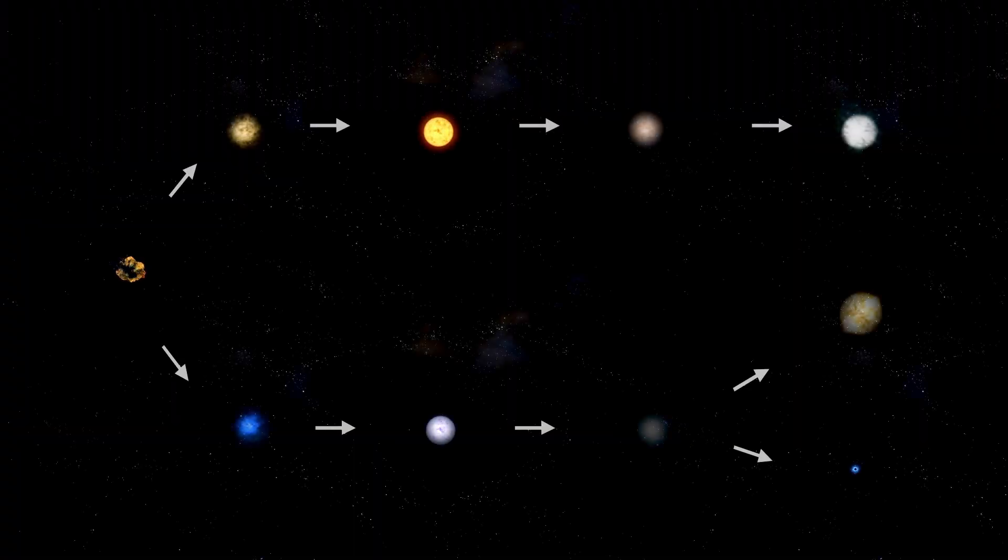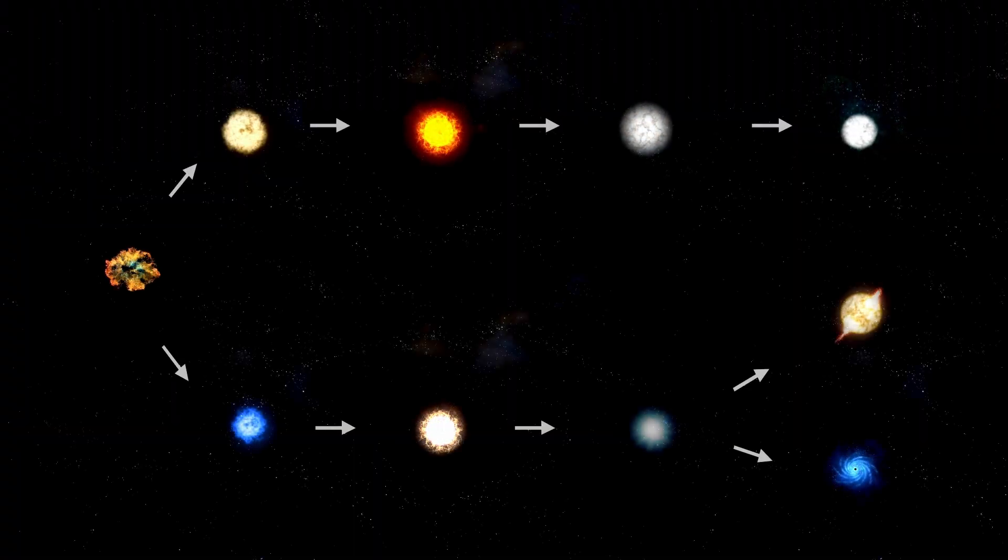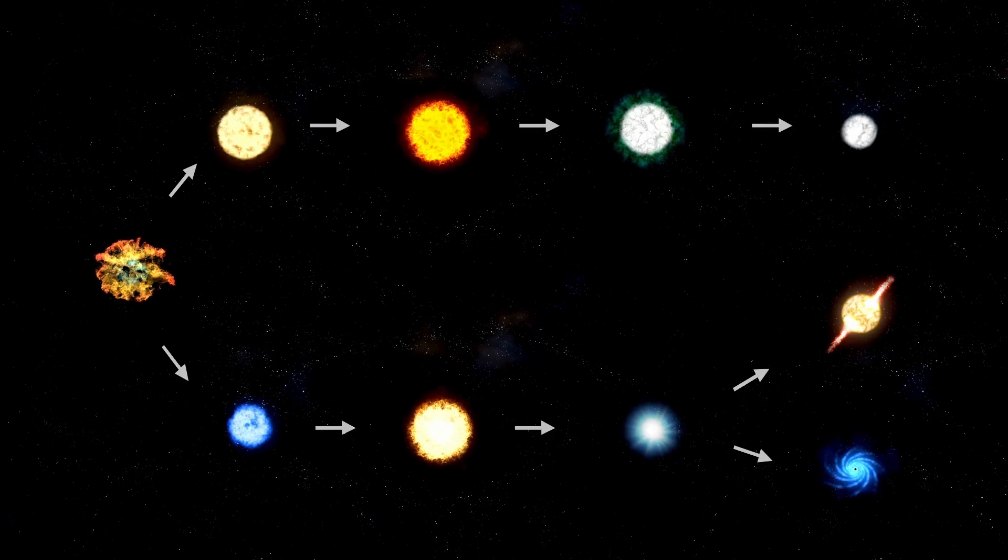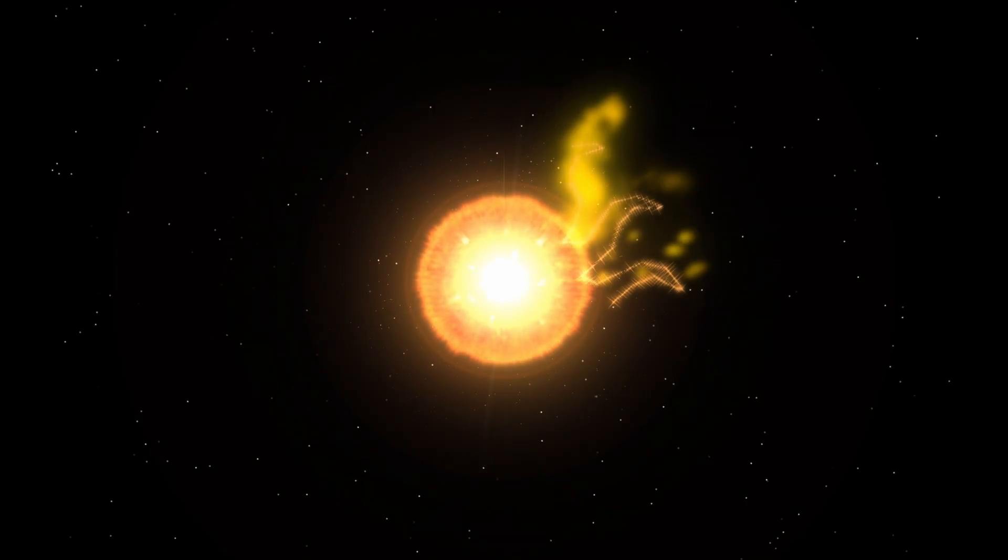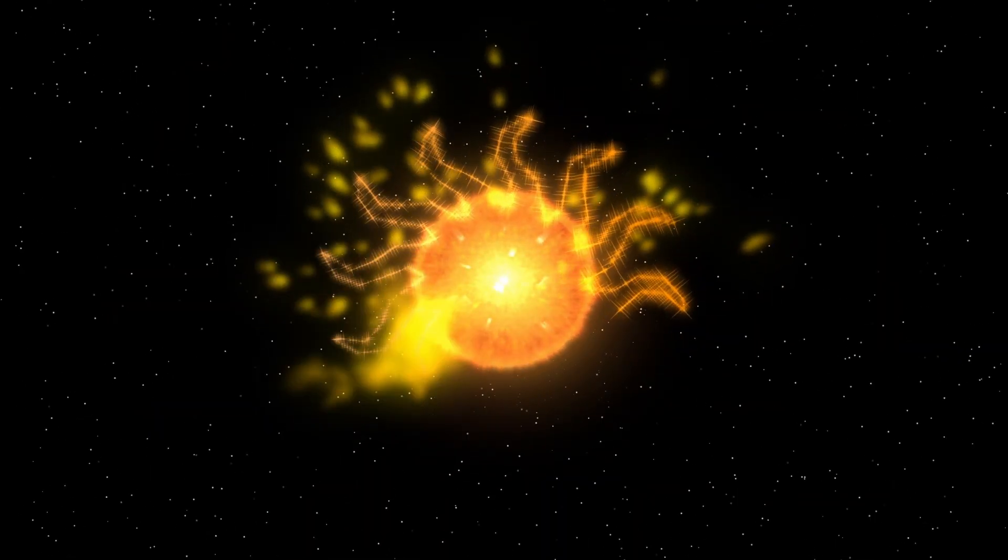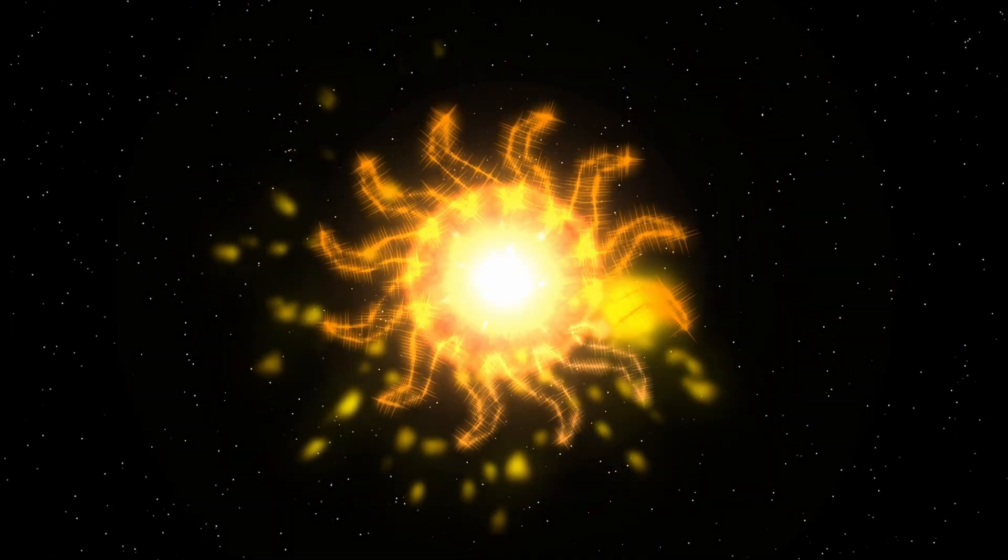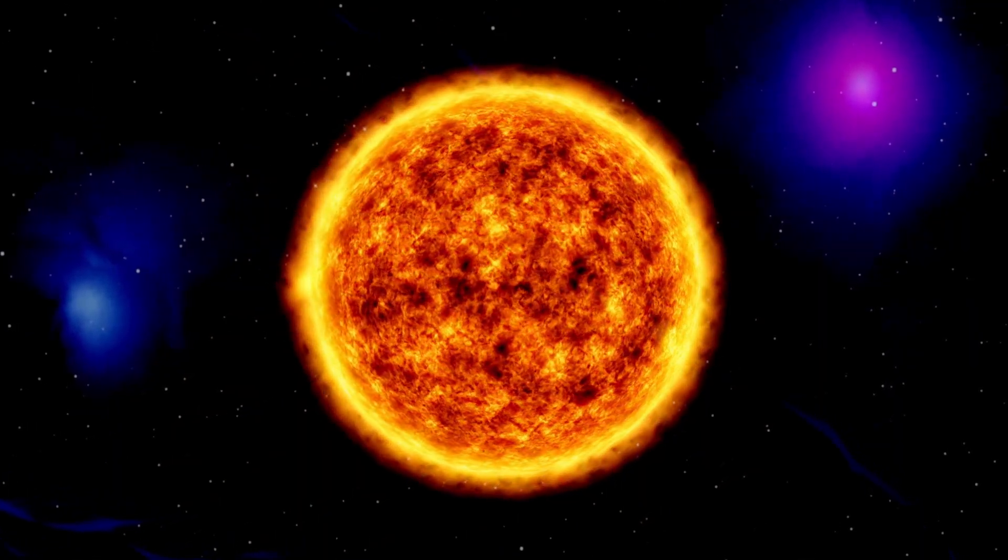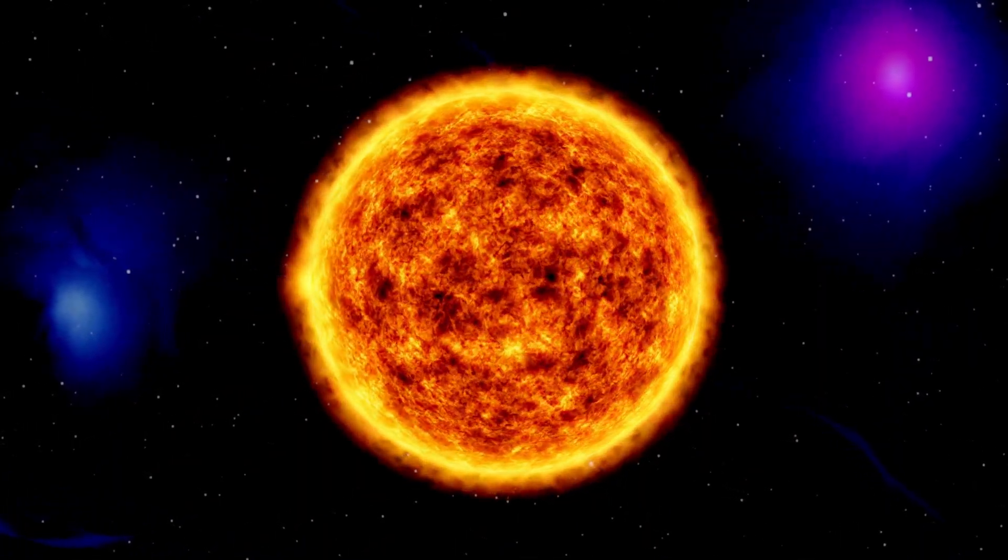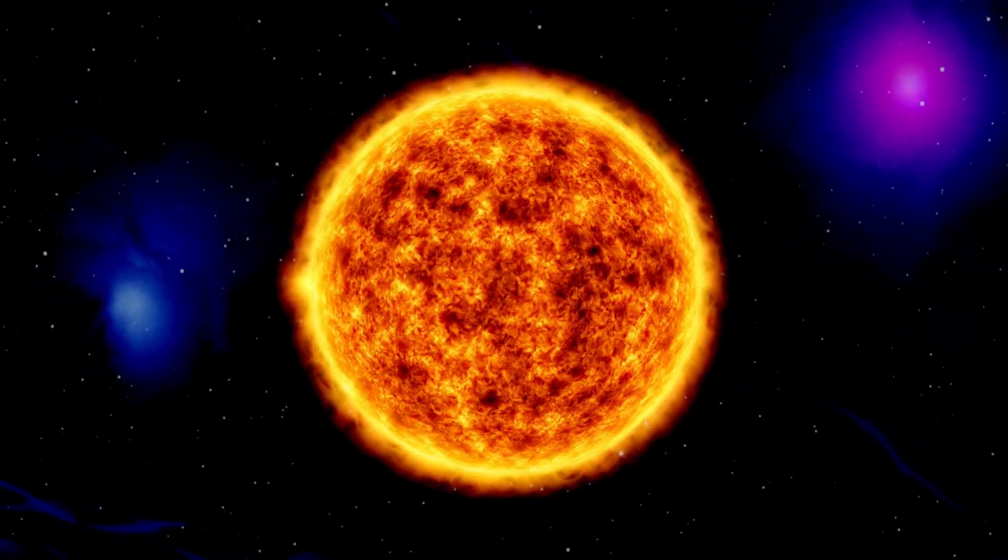The hexagonal structures aren't natural geological formations. They're manufactured, precision-engineered to a tolerance that suggests technology far beyond our current capabilities. Each hexagon is approximately 400 meters across. The entire surface of Atlas is covered with over 11,000 of these structures, and they're all oriented in patterns that suggest deliberate design, like solar panels or sensor arrays or something we don't have reference for.